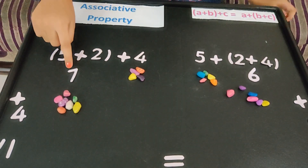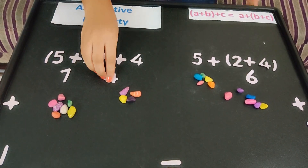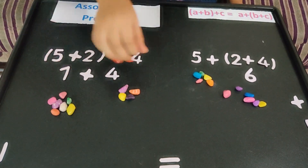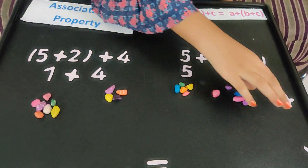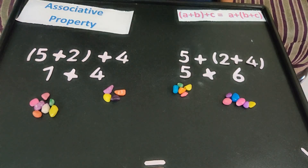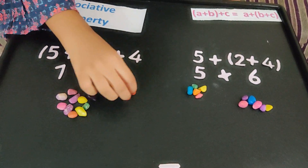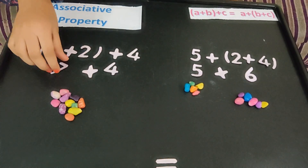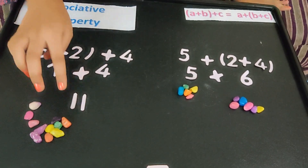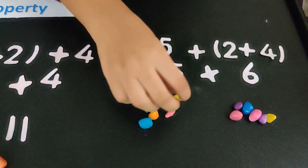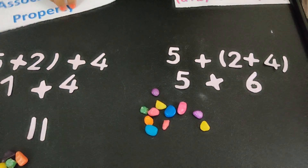Next, we have to add 7 plus 4, and on the other side 5 plus 6. Counting 7 plus 4: 1, 2, 3, 4, 5, 6, 7, 8, 9, 10, 11. So 7 plus 4 is 11. Then counting 5 plus 6: 1, 2, 3, 4, 5, 6, 7, 8, 9, 10, 11. So 5 plus 6 is also 11.